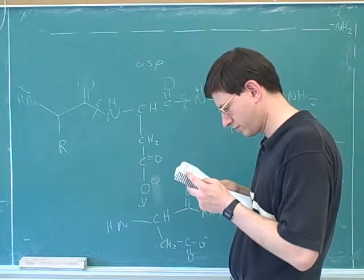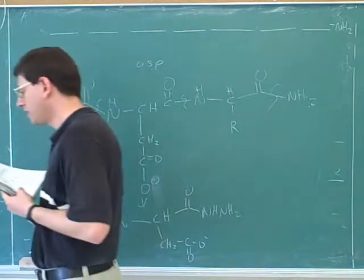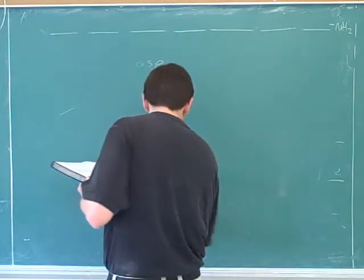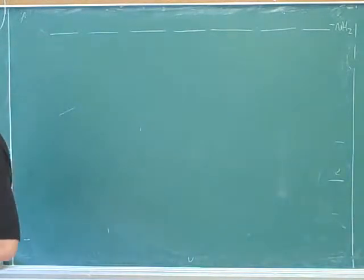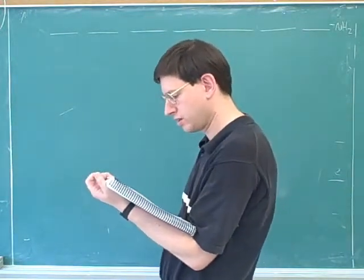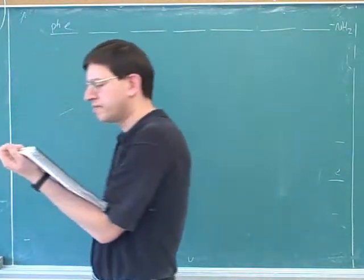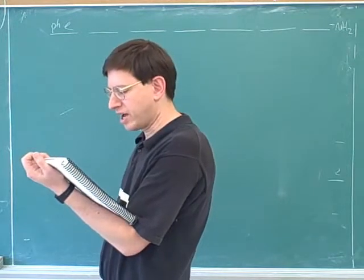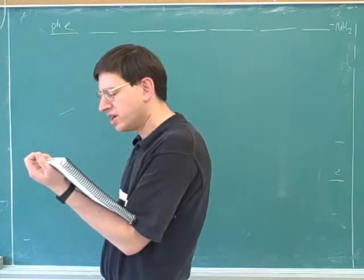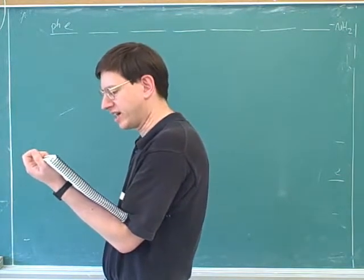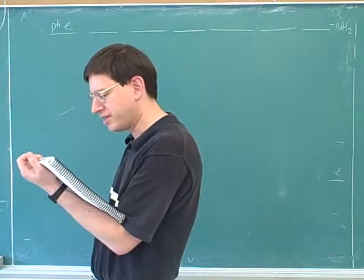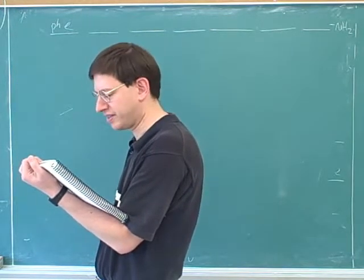So now we do it with dansyl chloride. Right. Now, what's the dansyl chloride point supposed to tell us? The N-terminus. That's right. Or if it's lysine. That's right. So we now know that the N-terminus is Phe. That's right.